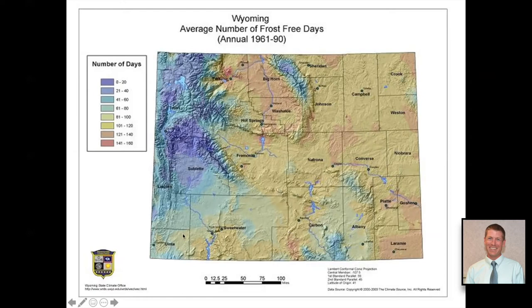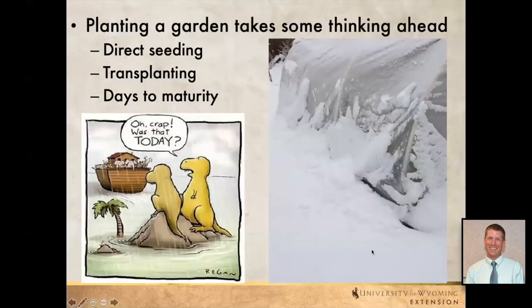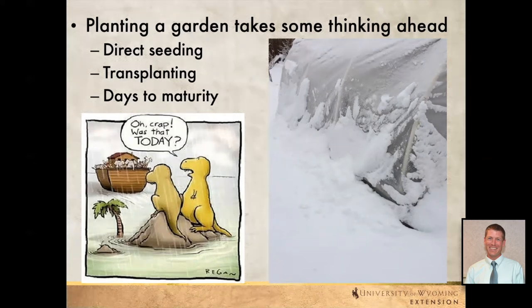This is provided by the Wyoming Climate Office. As we start planting gardens, we need to think ahead — when is that snow going to come, when will we experience frost? We might want to transplant larger plants rather than direct seeding, to avoid waiting for germination and establishment. We also need to think about days to maturity; some varieties mature much faster, so we always want to select quick-maturing vegetables for our short growing seasons.